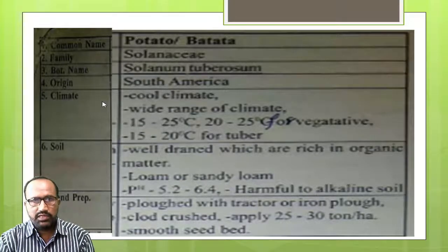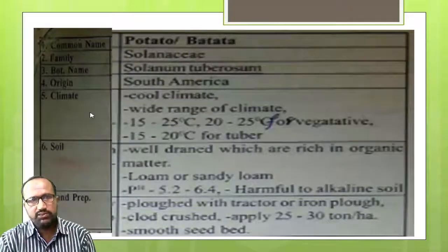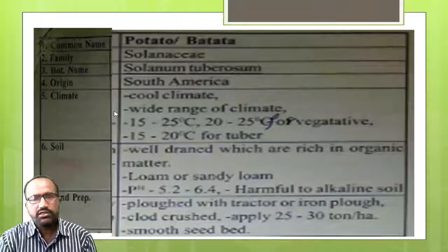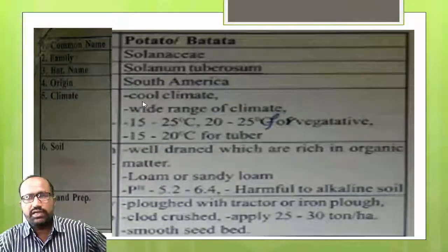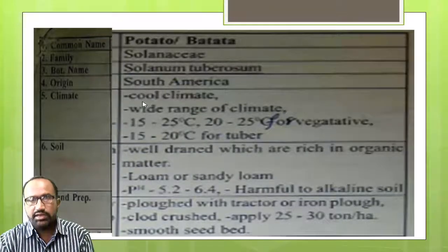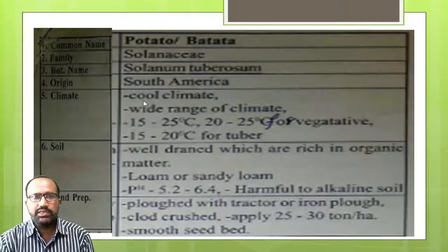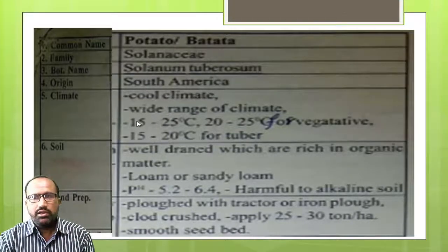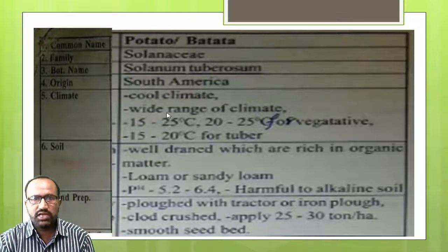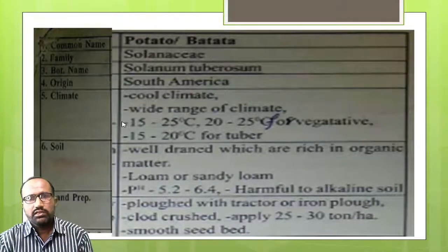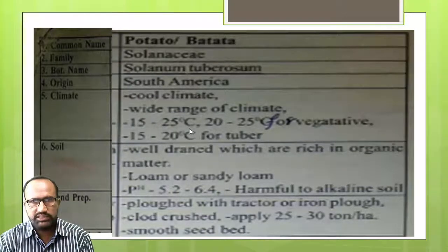Potato crop — soil and climate, meaning ecology. In ecology, climate and soil are asked together. Climate: it is a temperate crop. Potato is a temperate crop. It is grown in cool seasons and requires a cool and dry climate. It can grow in a wide range of climatic conditions. Optimum temperature range: 15 to 25 degrees Celsius for germination, and 20 to 25 degrees Celsius for vegetative growth.